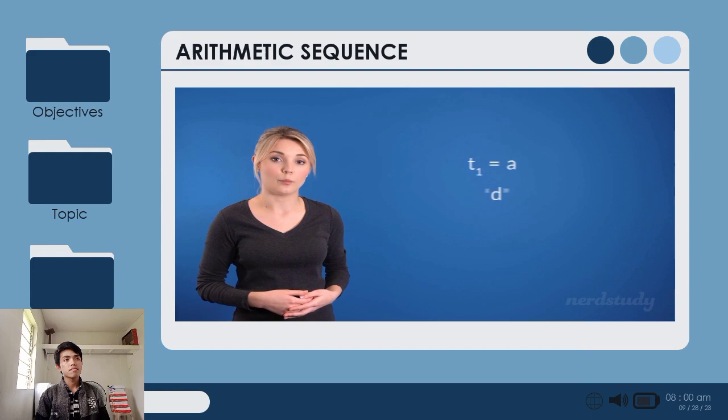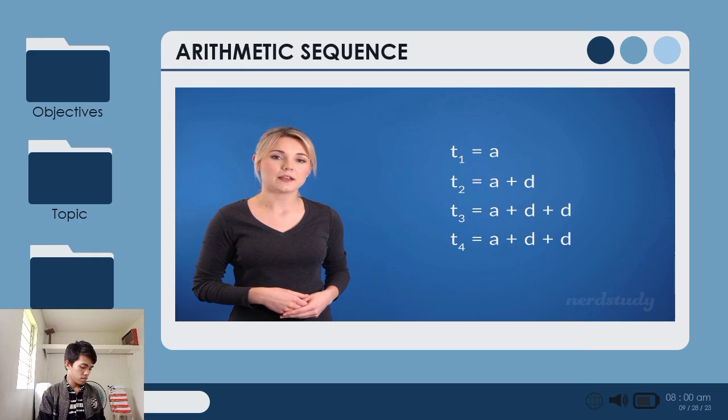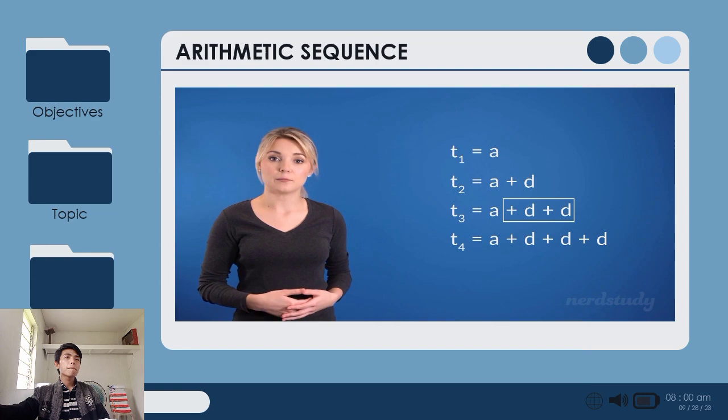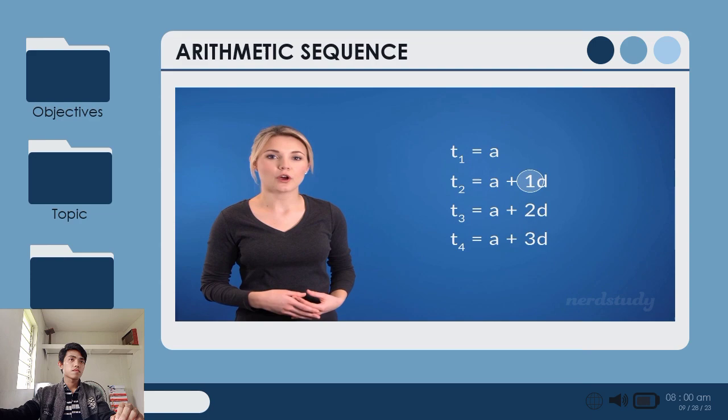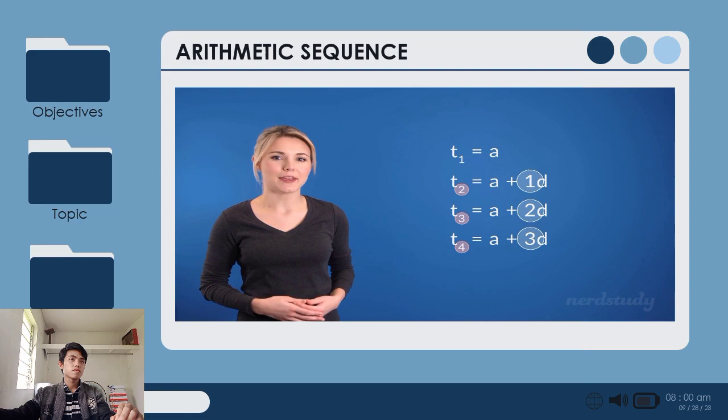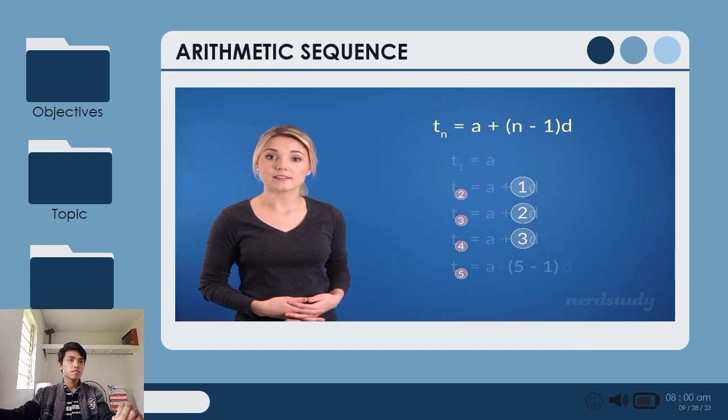This means that our second term would clearly be a plus d. Now from here, our third term would be a plus d plus d, wouldn't it? And our fourth would just be an addition of d one more time, giving us a plus d plus d plus d. Notice that we can simplify this. This can be simplified to a plus 2d, and this can be simplified to a plus 3d. But if we look at this number here, it seems to always be trailing behind by 1 from what term number we're on. This is easy to account for, since we can just write a formula like this. Notice that if we're to look for term 5, then we get t of 5 equals a plus 5 minus 1d, which becomes 4d. Awesome!